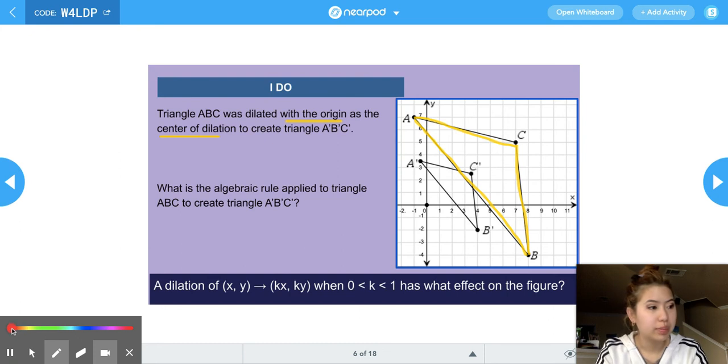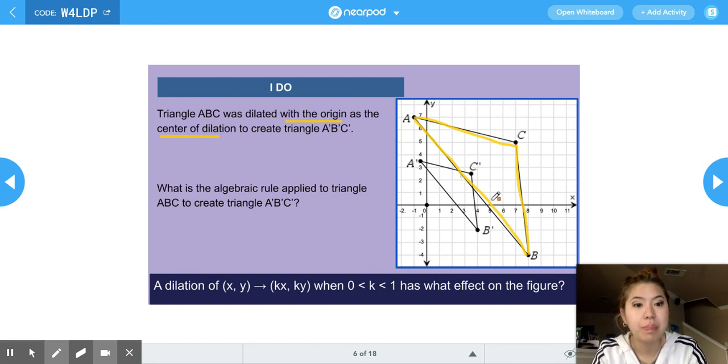So to do that, I'm going to start off with my dilated shape. I'm going to choose a point. It doesn't matter what point, but just to make it easier on us, I'm going to choose dilated B over the original B. And so I'm going to list out the coordinates of dilated B. The coordinate of dilated B is 4, positive 4 comma negative 2. And then the coordinate of original B is 8 comma negative 4.